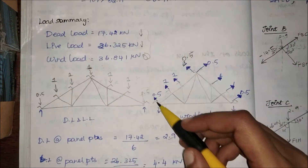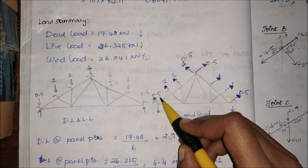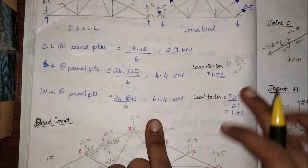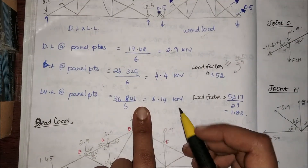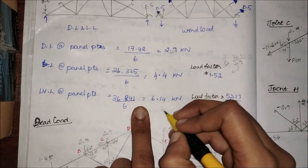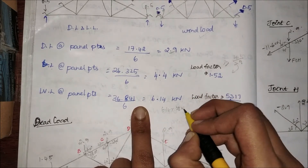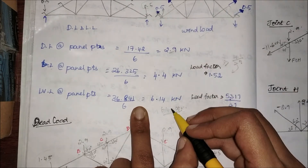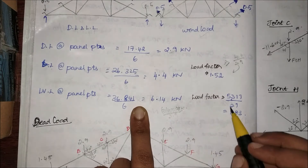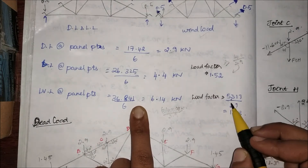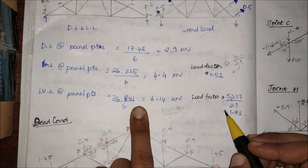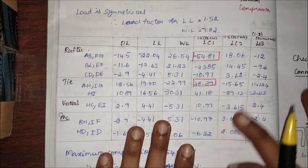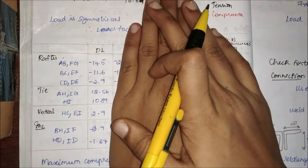For wind load, you can't simply divide 6.14 by 2.9 because wind load acts in the inclined direction — away from the rafter. Therefore I have to resolve the wind load to the vertical direction, so I multiply 6.14 into cos(α), that is cos(30°), then divide by 2.9. So 6.14 × cos(30°) = 5.317, divided by 2.9, giving a wind load factor of 1.83.